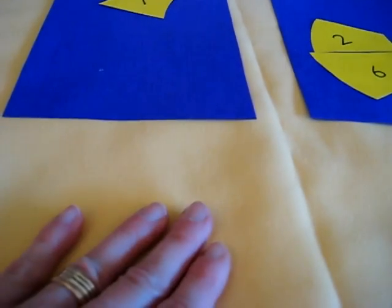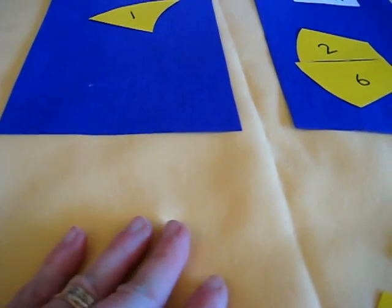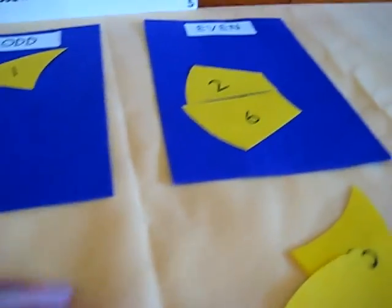And then four. So you see this one has a partner with this one, this one has a partner with this one. Yes, they're even. And then you go on to five or whatever it is.